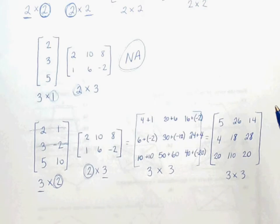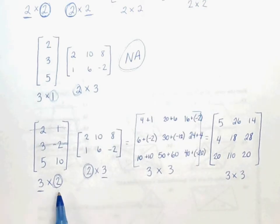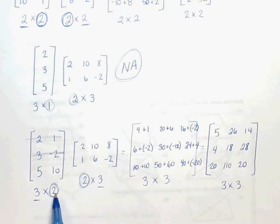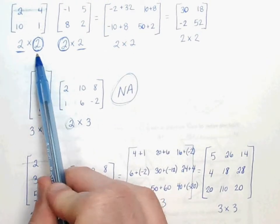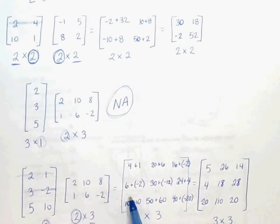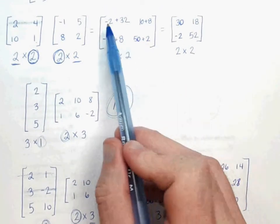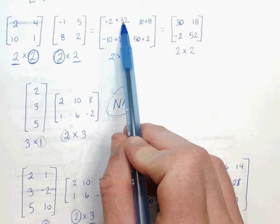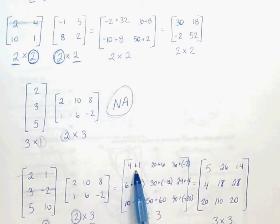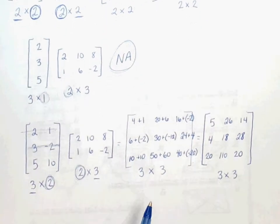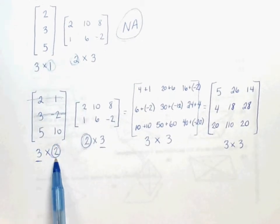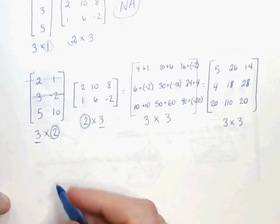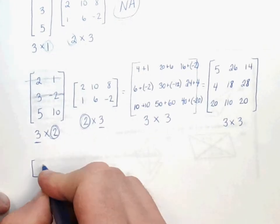Now, in the examples that we've done, we've only had two columns in our first matrix. This was a 3 by 2 and this was a 2 by 2. Which meant, when we did our scratch work, we only had two elements here to add together — two there, two there, two there. If we were to have more than just two rows, for instance, let's do this one last example.